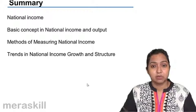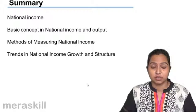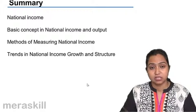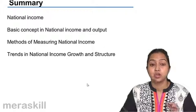There are three methods of measuring national income. First is the value added method, also known as the production method. Then there is the income method, where we add the incomes of all factors of production, along with mixed income, which cannot be separated.